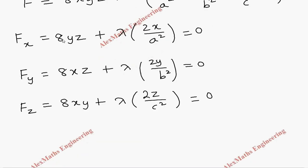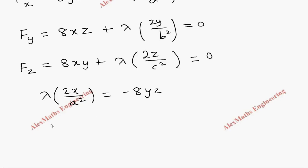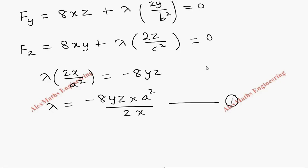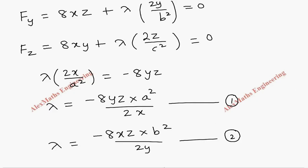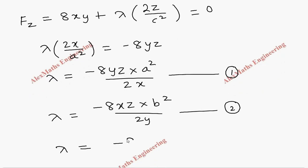From these equations we are going to find lambda. Taking 8yz to the other side: λ·(2x/a²) = −8yz, so λ = −8yz·a²/(2x). From the second equation: λ = −8xz·b²/(2y). And from Fz: λ = −8xy·c²/(2z). These are our three lambda expressions.